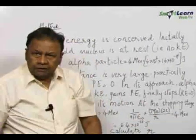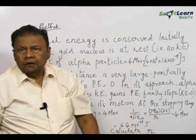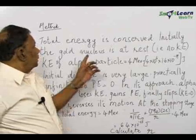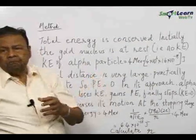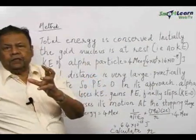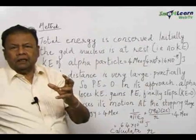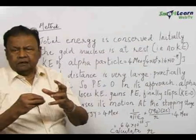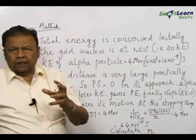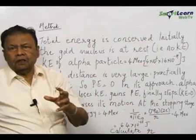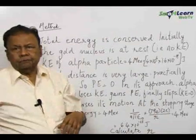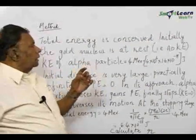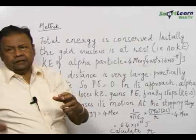We shall now discuss the method of solving the problem. Now you have a gold nucleus and an alpha particle being hurled at it for a head-on collision. What is happening? Initially the alpha particle is having a certain energy.